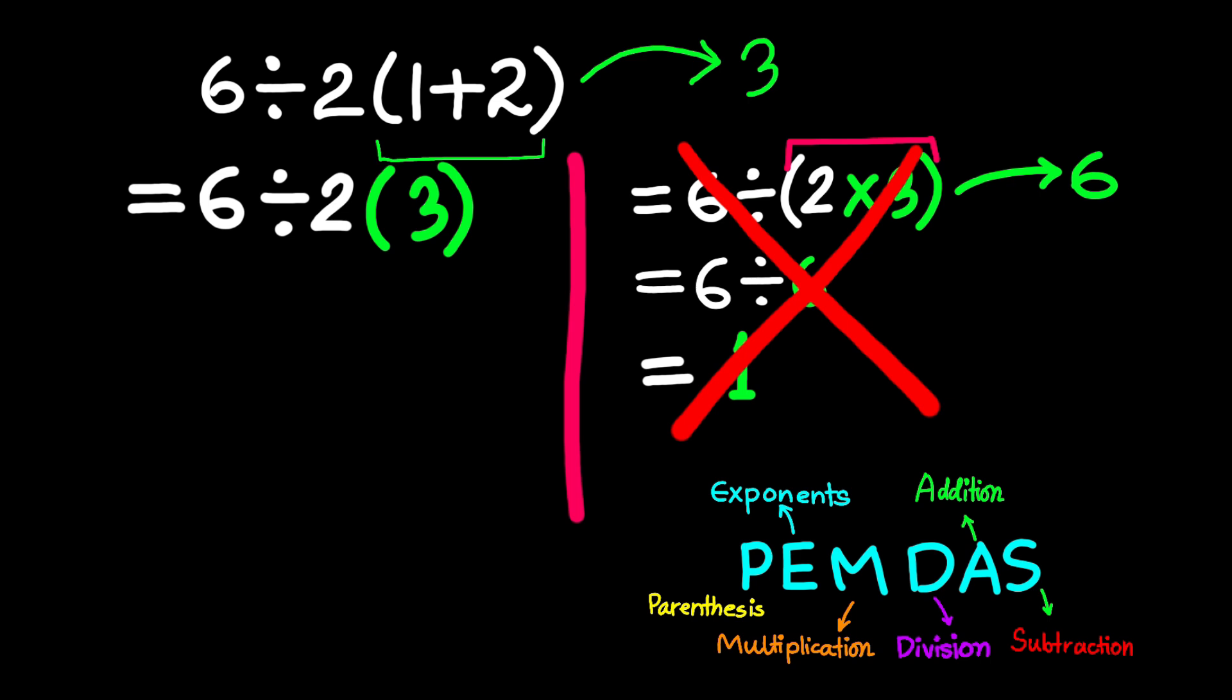Now, coming back to our expression, we already did the parenthesis part. That was 1 plus 2, which equals 3. So now we're left with 6 divided by 2 times 3. There are no parenthesis around the entire denominator, so we don't group it. We go left to right.